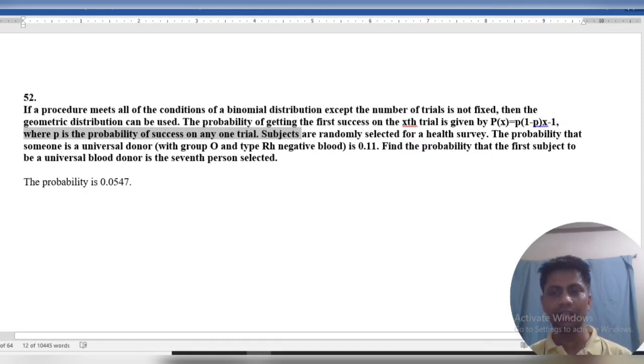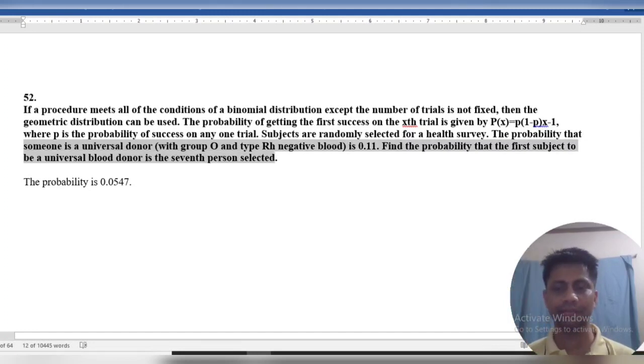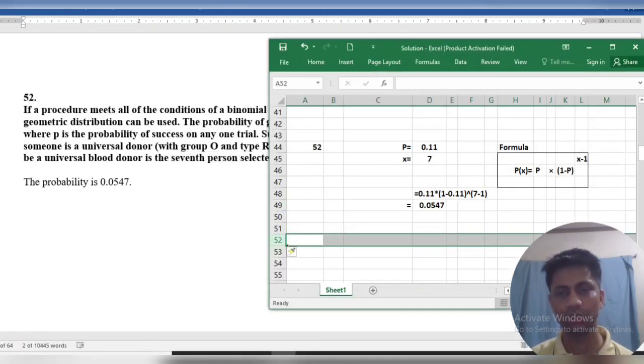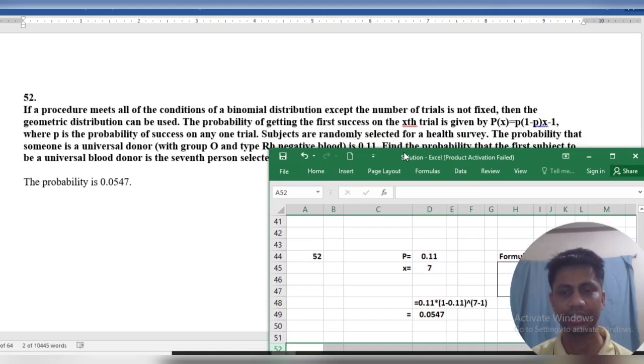Subjects are randomly selected. The probability of selecting a universal donor, blood type O Rh negative, is 0.11. Find the probability that the first subject to be a universal blood donor is the seventh person selected. Let's look at our solution.